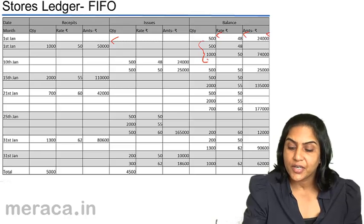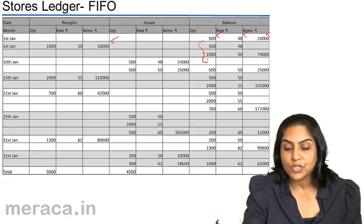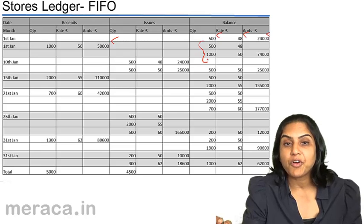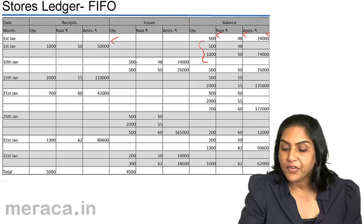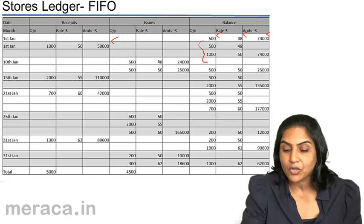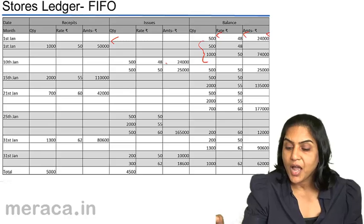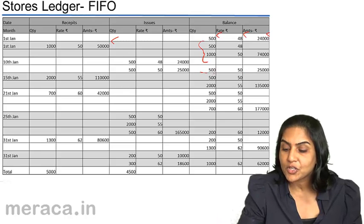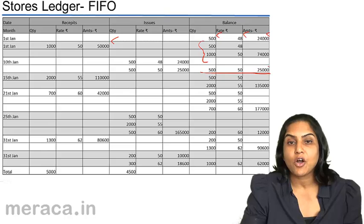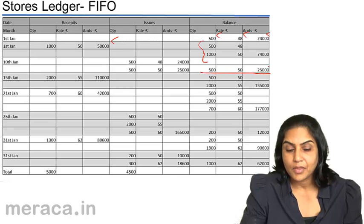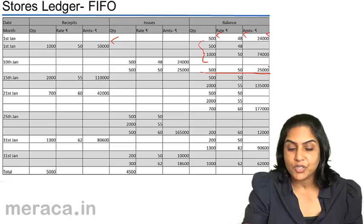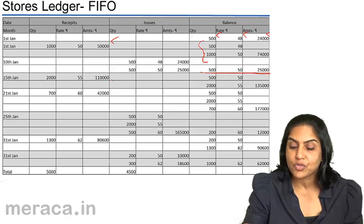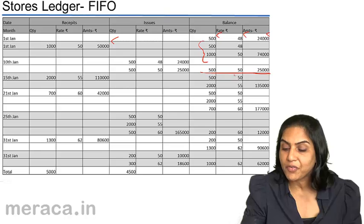On 10th January, there was a sale of 1,000 units. However, we are following the FIFO method, therefore 500 units from the first lot and 500 units of the second lot were issued — the first at $48 and the next at $50 — resulting in a balance of 500 units at $50. Next, there was a purchase of 2,000 units at the rate of $55, so the balance consisted of 500 units at $50 and 2,000 units at $55.